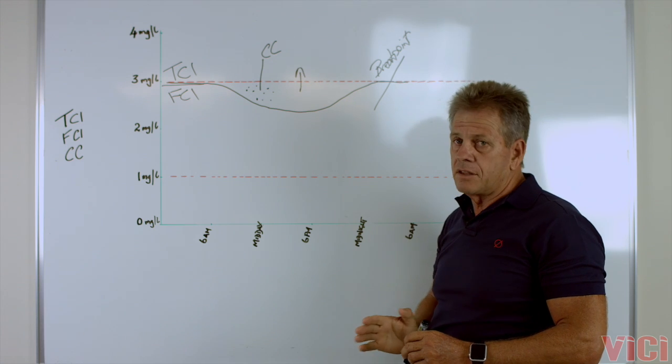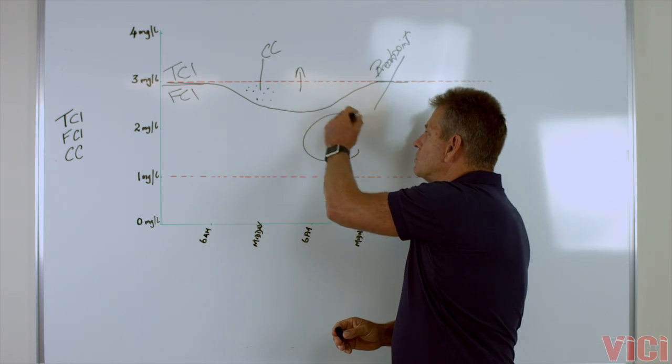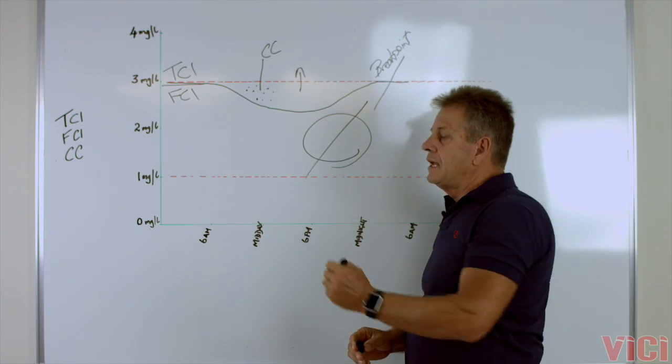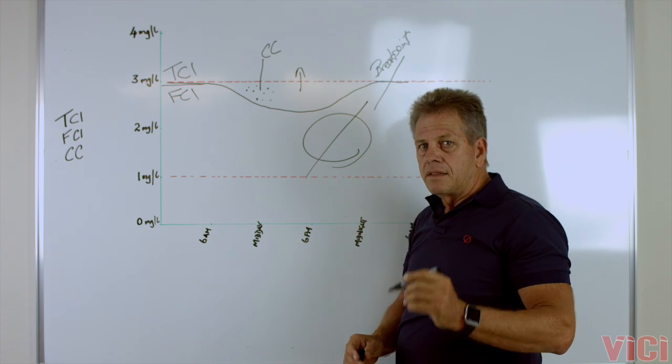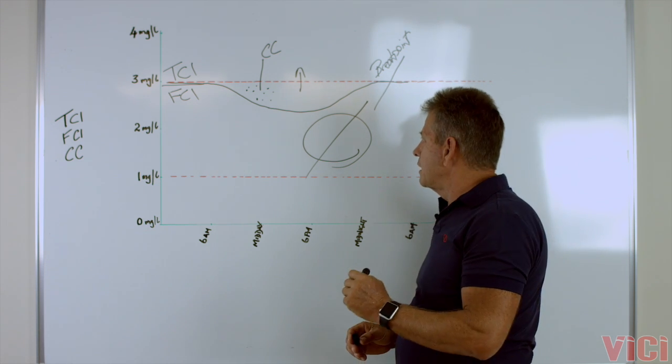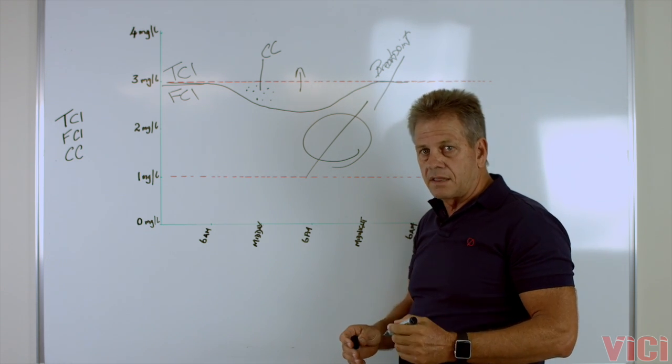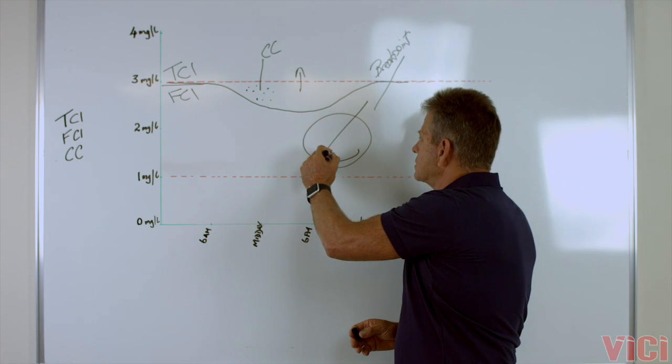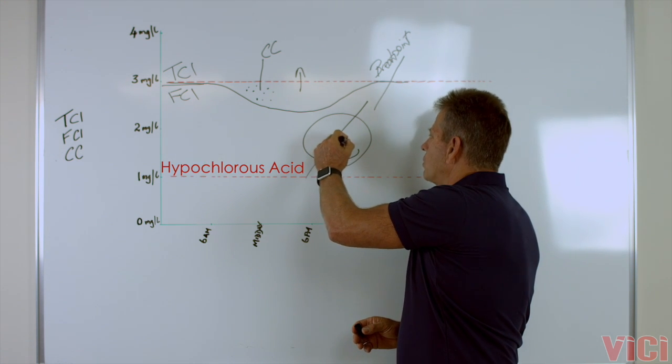The other thing that you've critically got to remember is that if we took the chlorine molecule and we dissected it, the ingredient in chlorine that does all of the work to kill the bacteria and viruses is called hypochlorous acid.